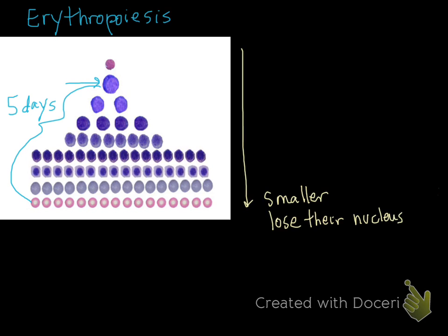And they go from blue to red, and that's due to hemoglobin. This occurs due to four divisions which allows for an increase in number of red cells as each of these cells actually divides.